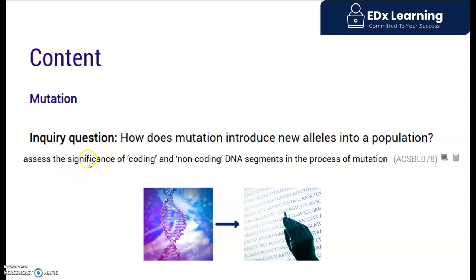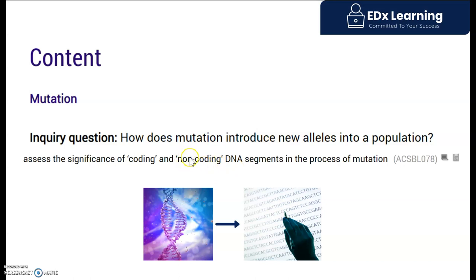You're specifically assessing the significance of coding — meaning making protein — and non-coding — meaning not making protein or polypeptide — DNA in the process of mutation. It's important to understand that 98.5% of your DNA does not code for any polypeptide. You might wonder what it's doing there, why it's there, and what a mutation can do to that region — and that's what we're going to be exploring today.